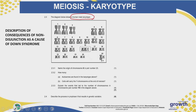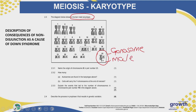Immediately when they say it's a male, what do you look for? You look for pair number 23, which we refer to as the gonosomes. At pair number 23, you can see that your chromosomes are not of equal size. You've got a big chromosome, which is your X chromosome, and a smaller chromosome, which is your Y chromosome. So that indicates that this person is a male.